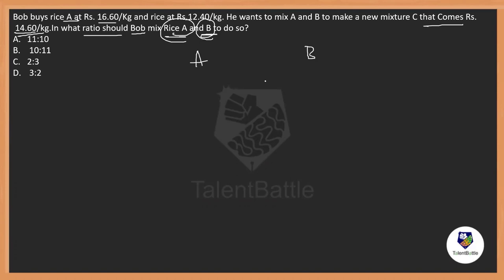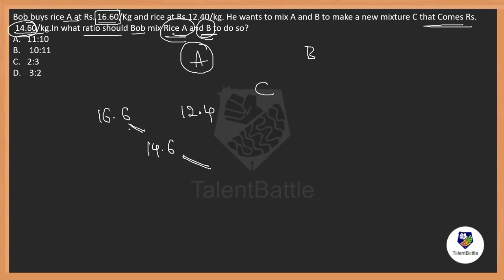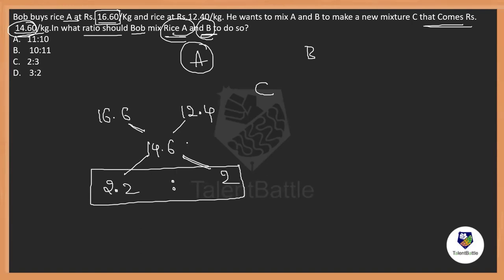Whenever you mix two units and obtain a resultant, apply the rule of alligation. What you are mixing goes on top. So A is 16.6 and B is 12.4 on the top; the resultant C is 14.6 in the middle. The differences are placed on opposite sides: 16.6 minus 14.6 is 2 on one side, and 14.6 minus 12.4 is 2.2 on the other side. So the ratio of the mixture is 2.2 to 2.